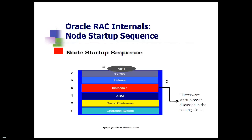Once the clusterware is up and running, the virtual IP services on the server will come online. Once your virtual IP services are online, the ASM instance across all the nodes is going to start up. Once the ASM instance is started, you will see all your ASM disks are available and the disk groups that have already been created will be mounted automatically. Once ASM is successfully started, your RDBMS instance on the particular node will start automatically, followed by the listener. When the listener is available, all your connections can use it to connect to the database. Finally, if you have any services defined, those will become up and running.